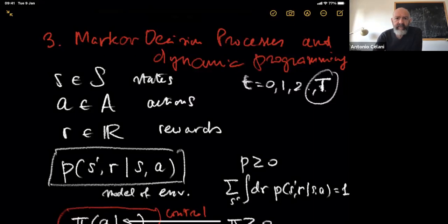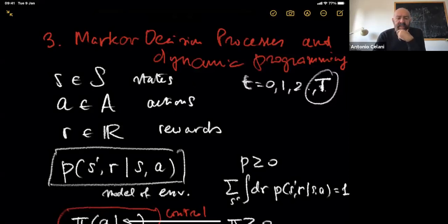Last time we formally introduced the notion of Markov decision processes. The structure is made of states, actions, and rewards, and then there is a transition probability, which means that we are explicitly including the possibility that everything is stochastic in the dynamics of our system. We also have access to a control over the system.